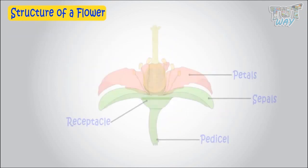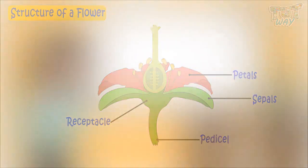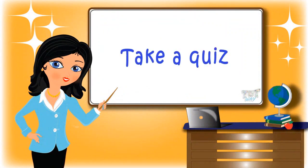So kids, we learned about the structure of a flower. And in our next assignment, we will learn how this flower produces seeds, which in turn produces new plants. Now go ahead and take a quiz to learn more. Bye-bye!